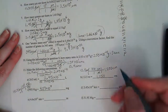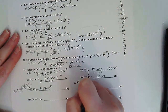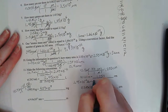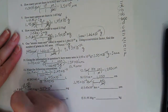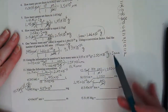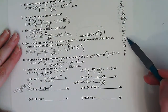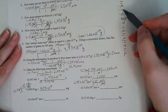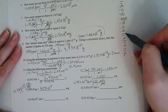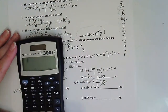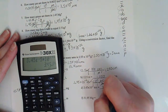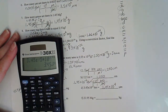Part D: 3.45 times 10 to the negative 5th kilometers to micrometers. Kilometers on the bottom; micrometers on the top. Kilometers are right here; micrometers are here. Kilometers are definitely bigger. Counting: 1, 2, 3, 4, 5, 6, 7, 8, 9 — 10 to the 9th. So I get 3.45 times 10 to the 4th micrometers.